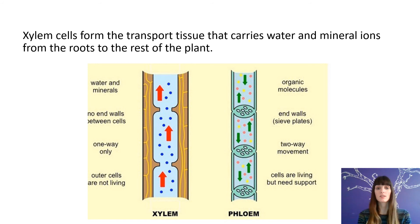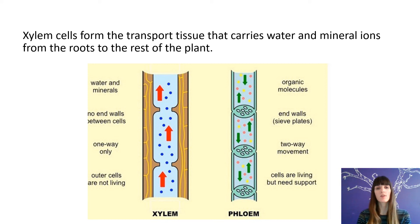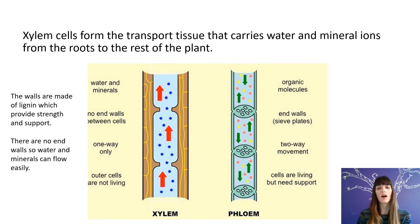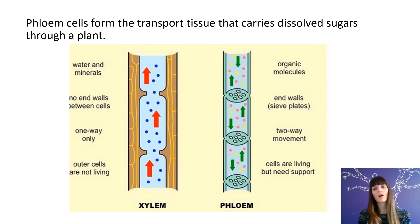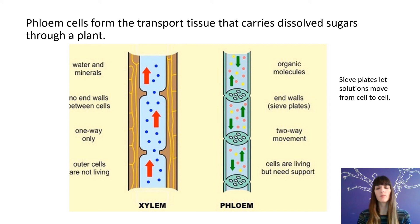The xylem and the phloem are part of the transport tissue in a plant — a little bit like how in us we have our circulatory system. The xylem have walls made of lignin and they are dead cells, which provide strength and support to the plant. There's no end wall, so water is able to flow really easily through it. The phloem is made of living cells with little sieve plates which let solutions move from cell to cell, and it's a two-way flow — meaning that things made in the leaves during photosynthesis are able to be transported around the whole plant.